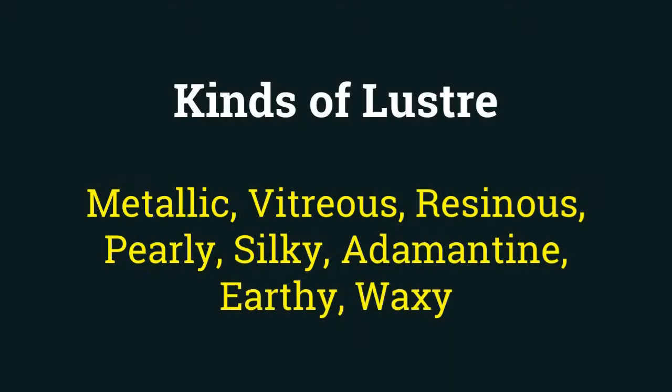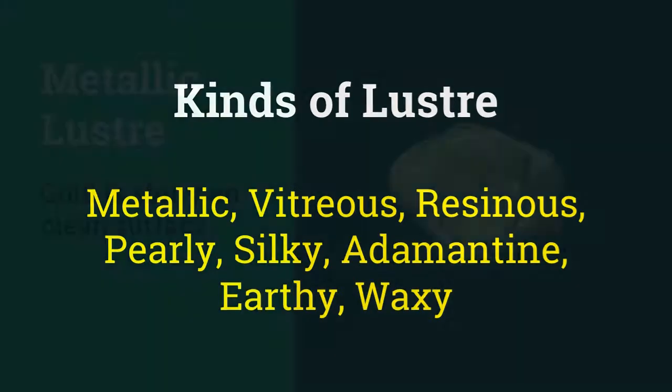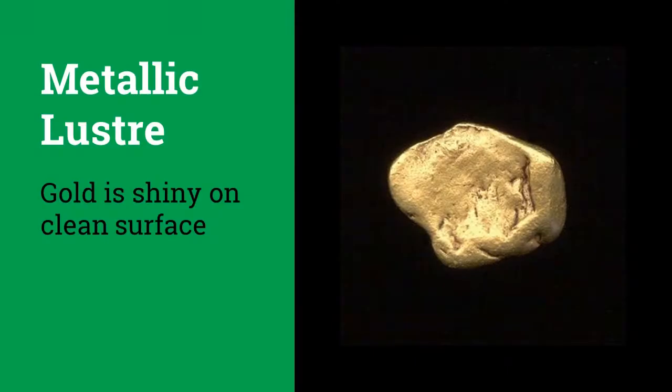Coming over to the kinds of lustre, we have 8 different kinds of them: metallic, vitreous, resinous, pearly, silky, adamantine, earthy, and waxy.